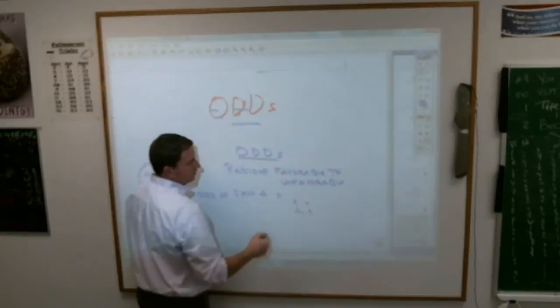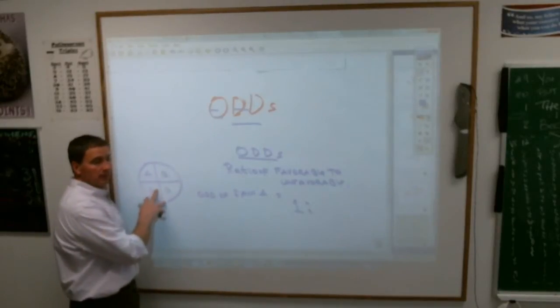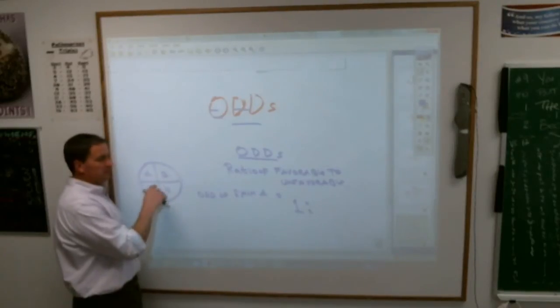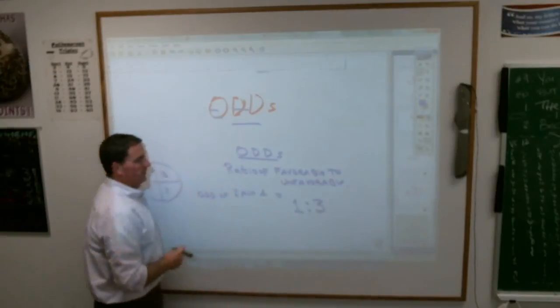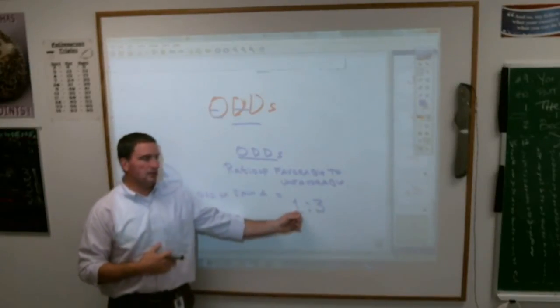But instead of putting four as your other number, you have to say what are the numbers that aren't A's? How many of these are not A's? One, two, three. My odds of spinning an A are one to three.